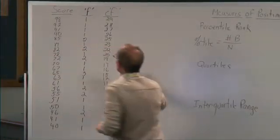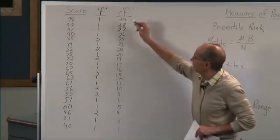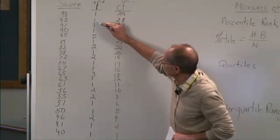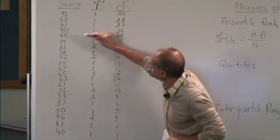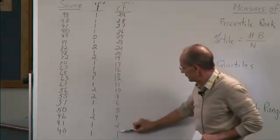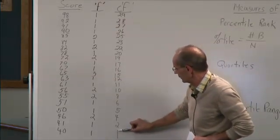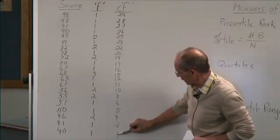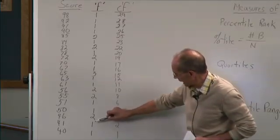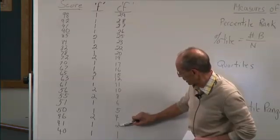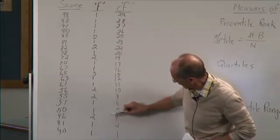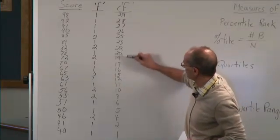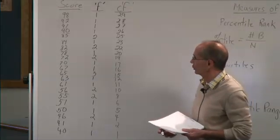Here is a class with 29 students. Here are the scores on a test ranging from 40 to 98, and here is the frequency of each score. We have one score at 91, two people scored 85, three people scored 65. This is the cumulative frequency — as we go from the lowest score to the highest score, we keep adding how many scores are at that point. At 40 we have one score; moving to 41, we add another one, giving two. Moving to 46, we add two more for a total of four, and so on, until we reach 29, which is the total number of scores.